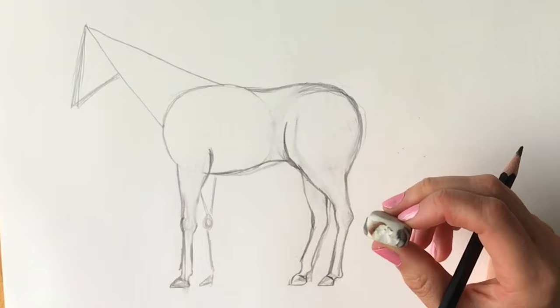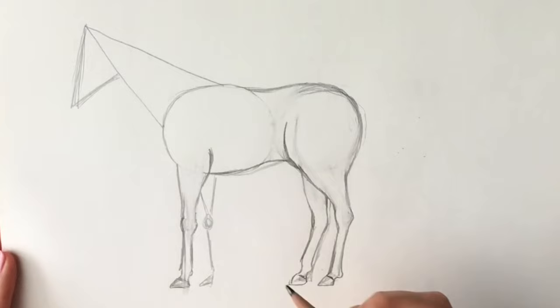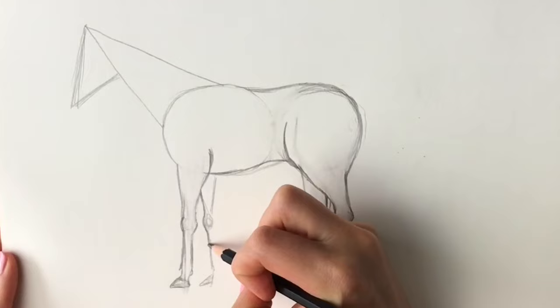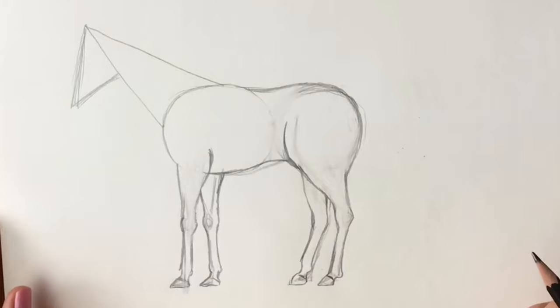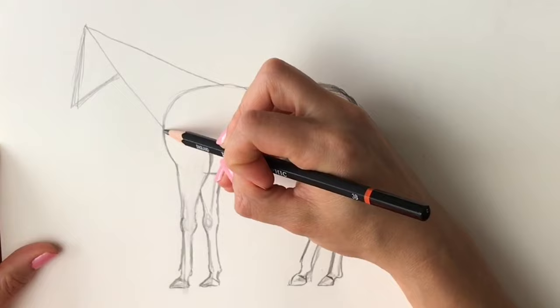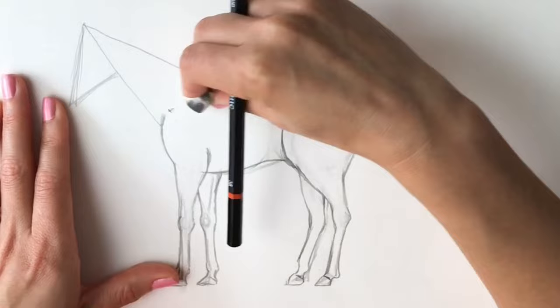Don't worry, I'm going to properly rub out everything at the end, but I just want you to be able to see it. And I'll do the same on the other leg, so bring it down, bring it round the hoof, round like so, all the way up to the top. Okay, now we're going to be doing the shoulder, so bring it round like so. I'm going to rub out this shape now so that you can see it.